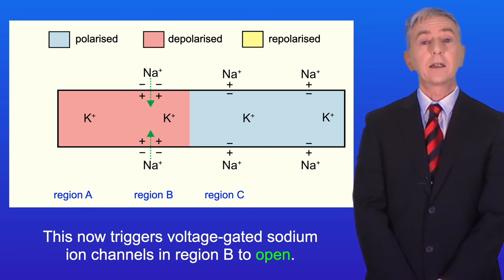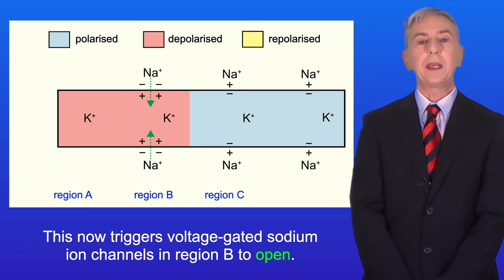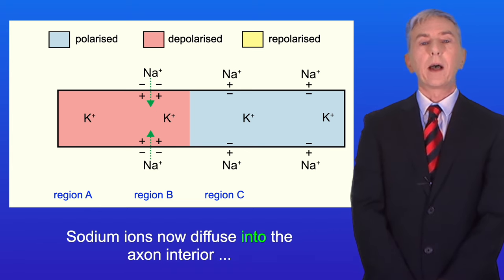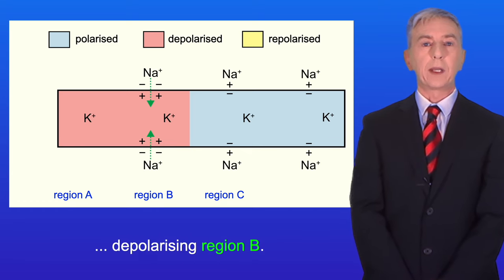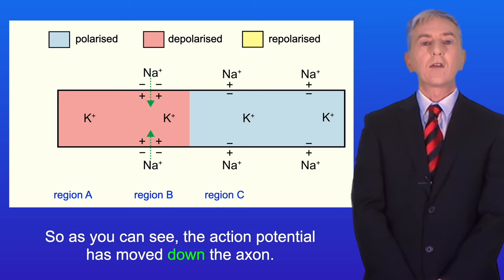This now triggers voltage-gated sodium ion channels in region B to open and sodium ions now diffuse into the axon interior depolarizing region B. So as you can see the action potential has moved down the axon.